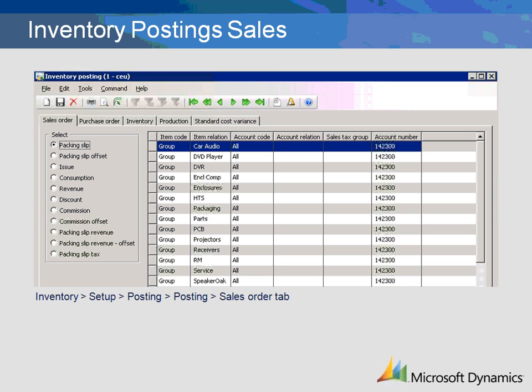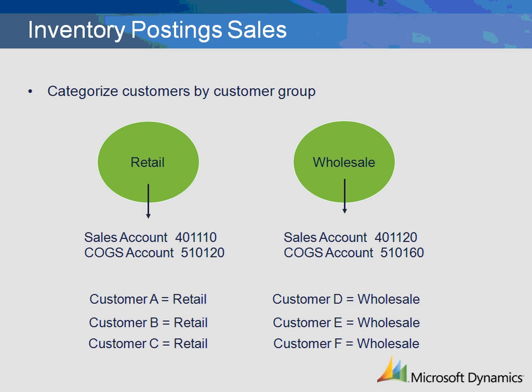You can set up each of the transactions by item, item group, customer, customer group, or by the selection of all in each area. You can mix and match the use of table, group, and all when defining what accounts are to be mapped. For example, let's say you need to post your revenue and cost of goods sold to different ledger accounts based on what kind of customer you sold to, such as retail versus wholesale.